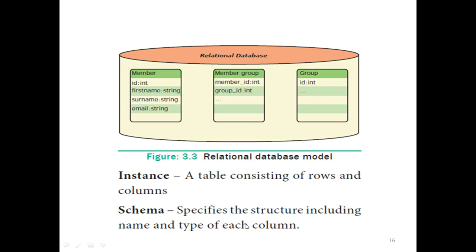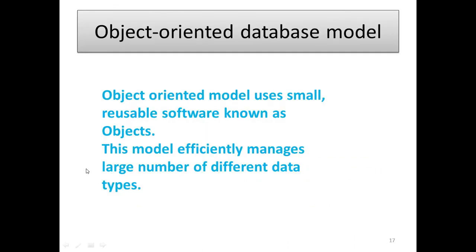Schema specifies this structure including name and type of each column. For example, member. The members column is ID, first name, surname, email. Suppose, if you consider the member group, member ID, group ID and so on. This simply says schema.